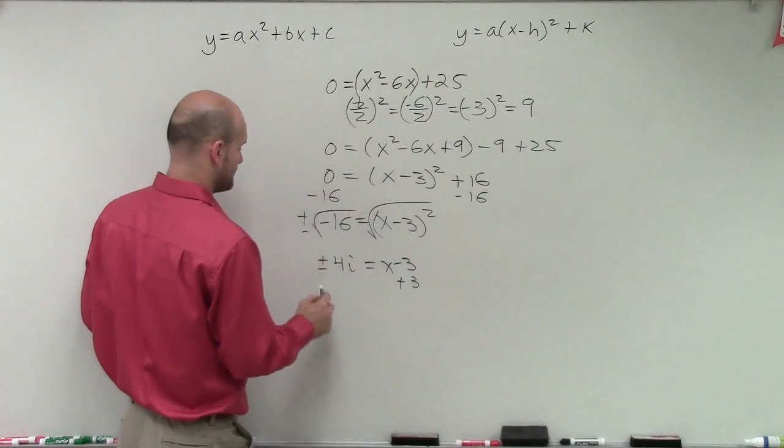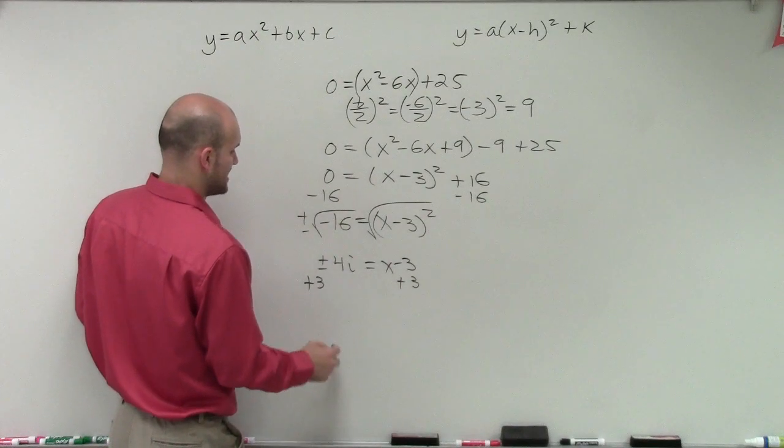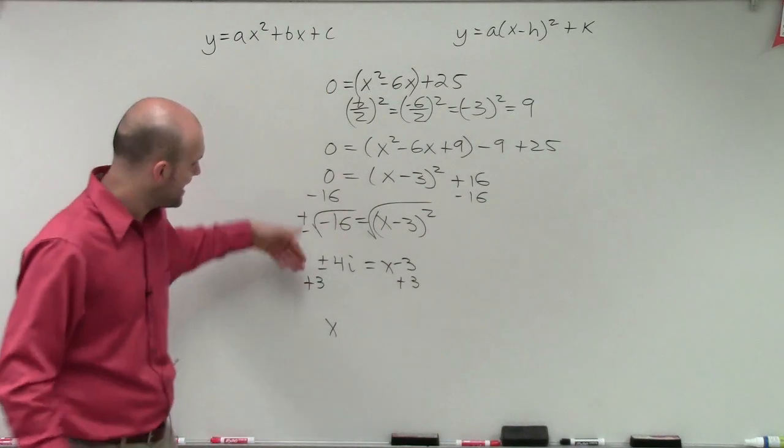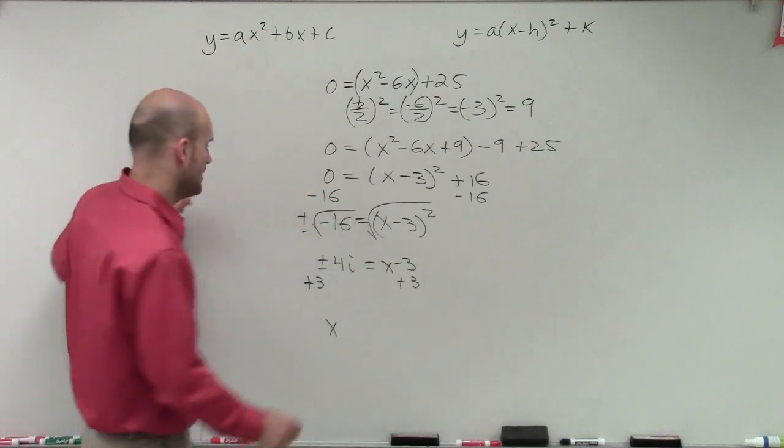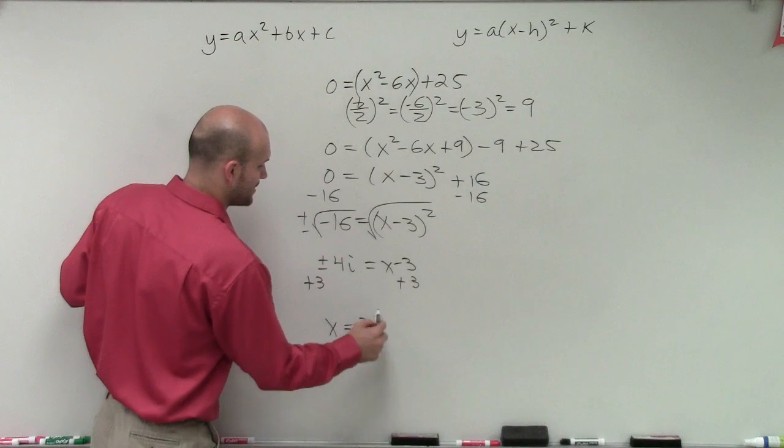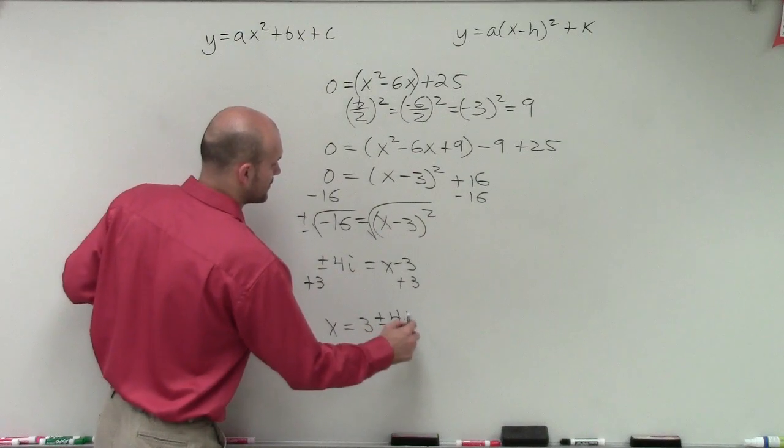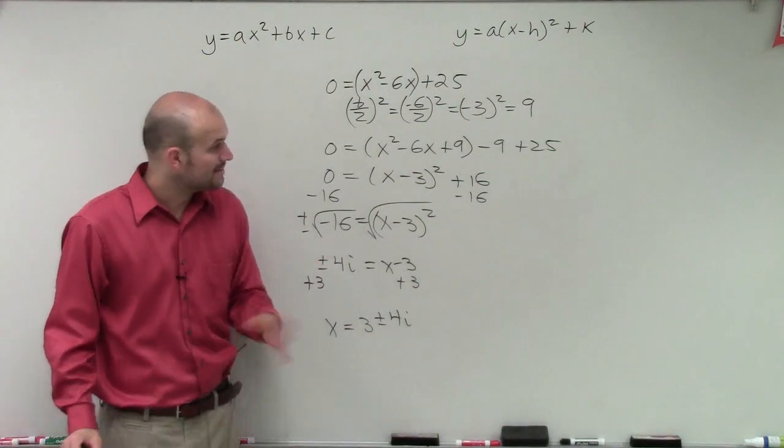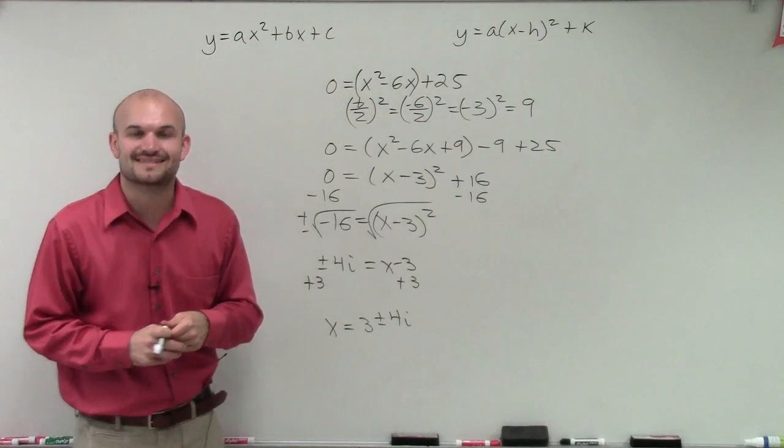Then I add the 3 to both sides. And then since I cannot combine a real and an imaginary number, my final answer is going to be x equals positive 3 plus or minus 4i. So there you go, ladies and gentlemen. So that is how you solve by completing the square. Thanks.